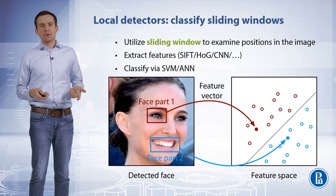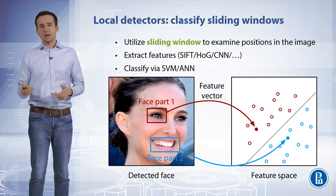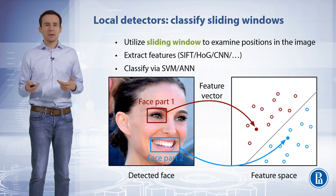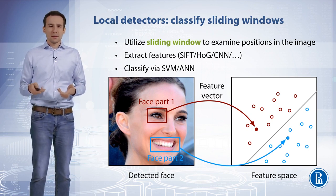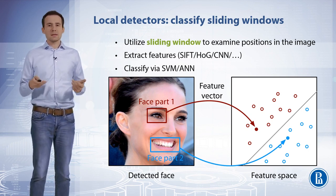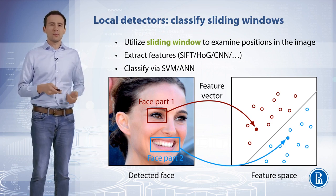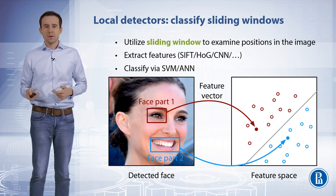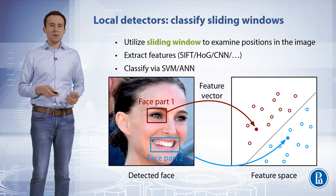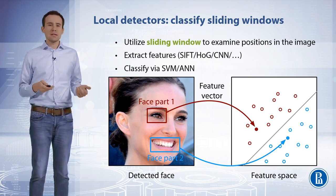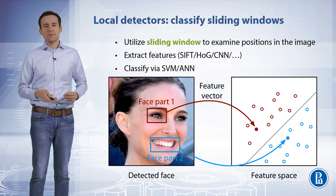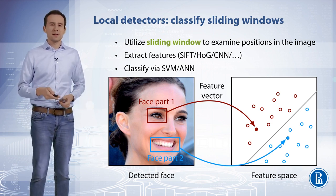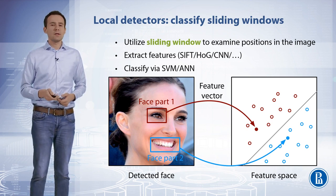For each face part, such as eyes or mouth, we can construct local detectors. Such a detector utilizes a sliding window to search for a location in the image containing the facial part. For each position of the sliding window, image features such as CNN features or HOG features are extracted, and then classified as related or not related to the facial part.